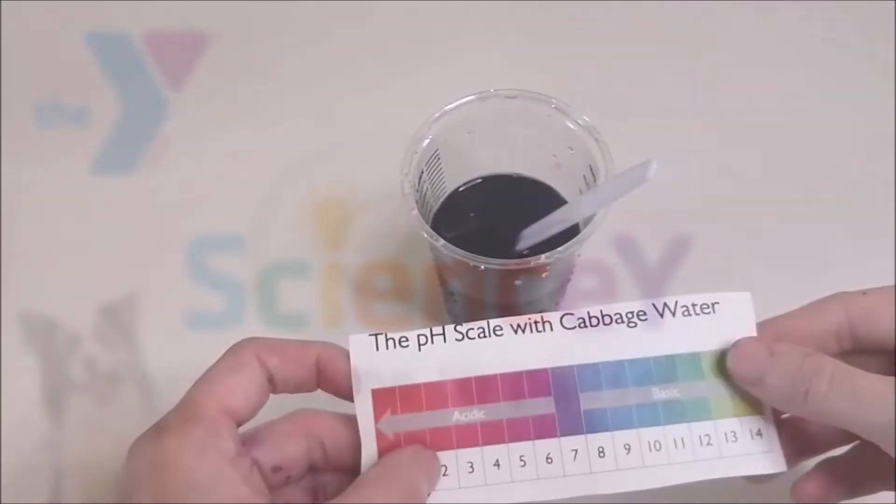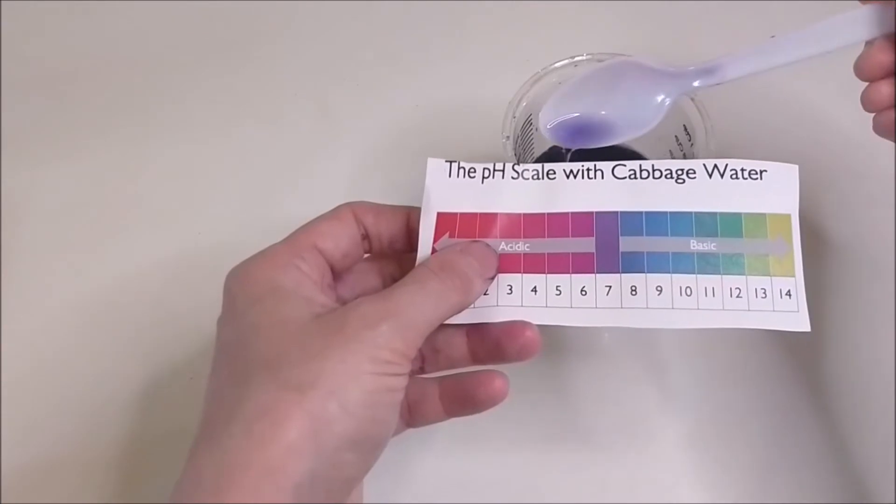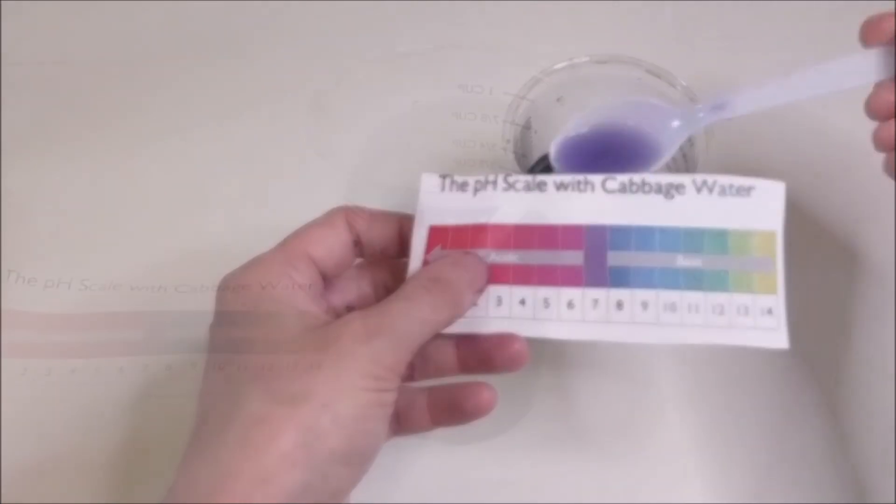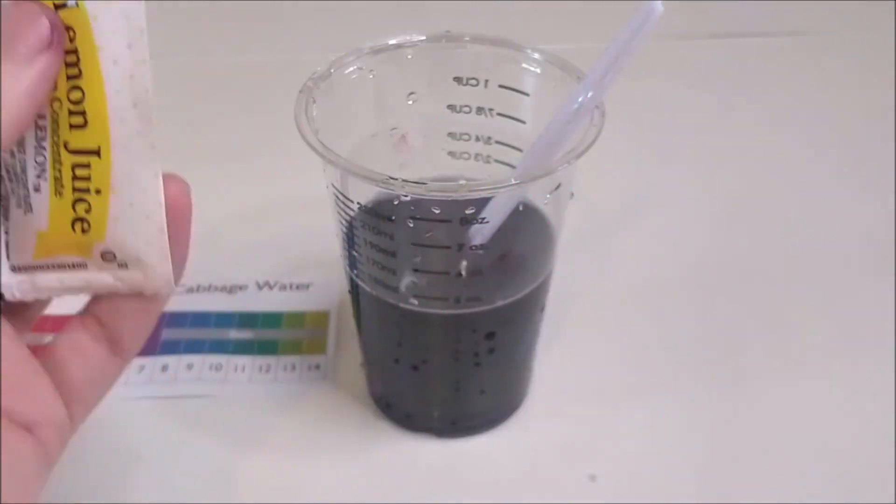So probably you found that the pH of the plain water is close to 7. That's pretty much the middle of the scale. We say that it's not really acidic or basic. We call that halfway point neutral.